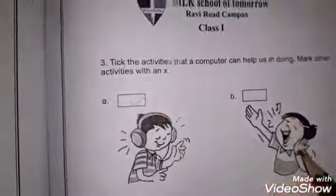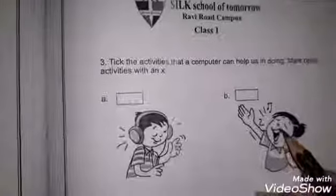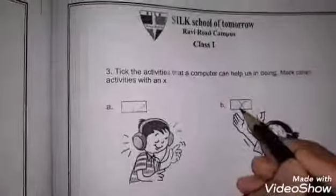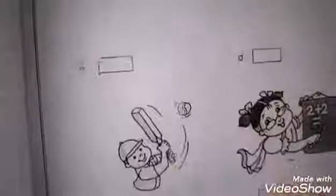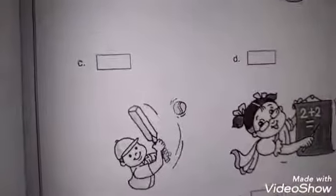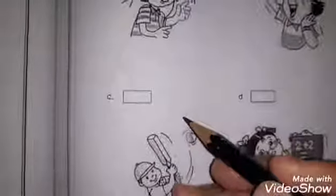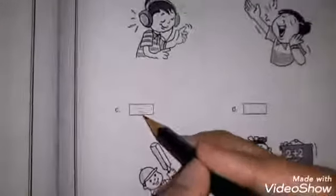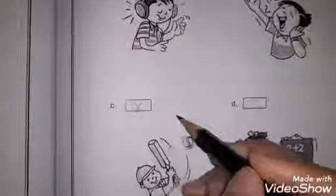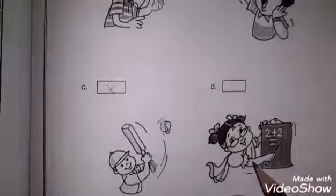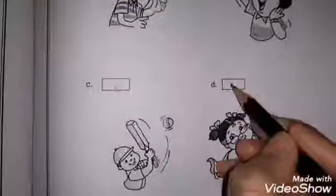B: Singing. A computer cannot sing, so we need to do a cross. C: Cricket. Cricket cannot be played on a computer, so we will do a cross. D: Sums. You can do sums on a computer, so we will do a tick.